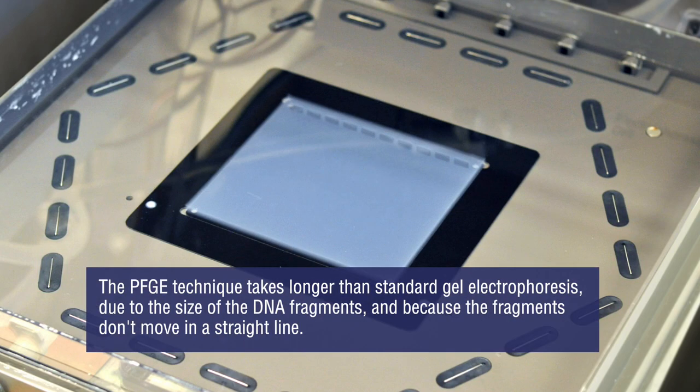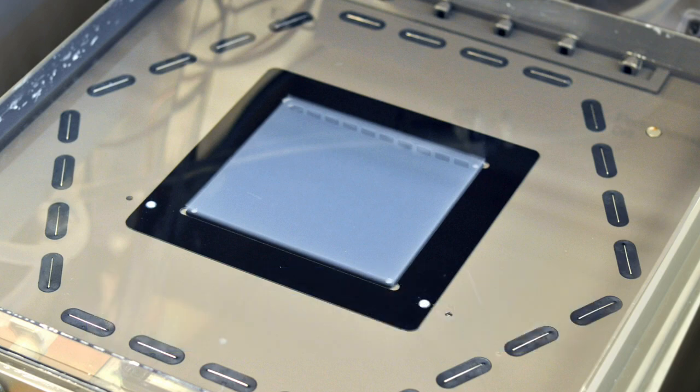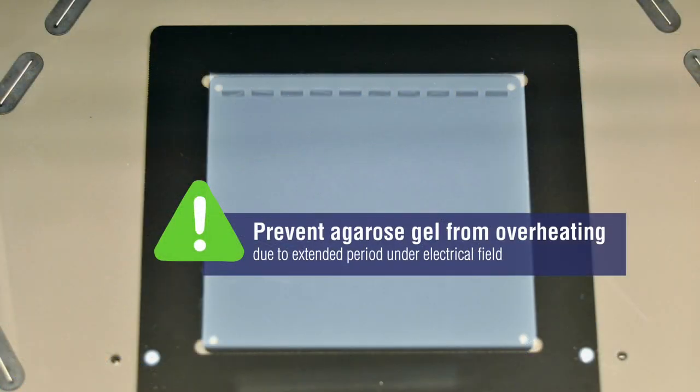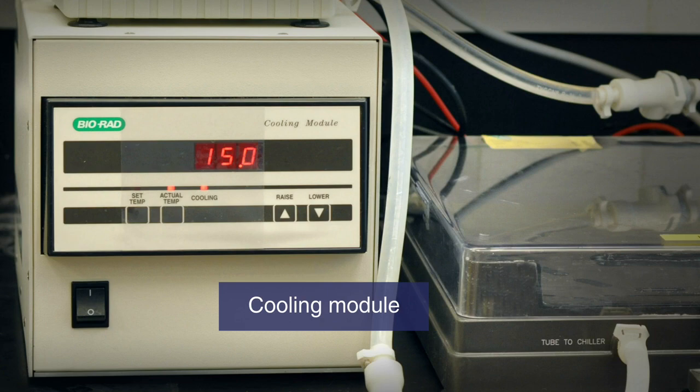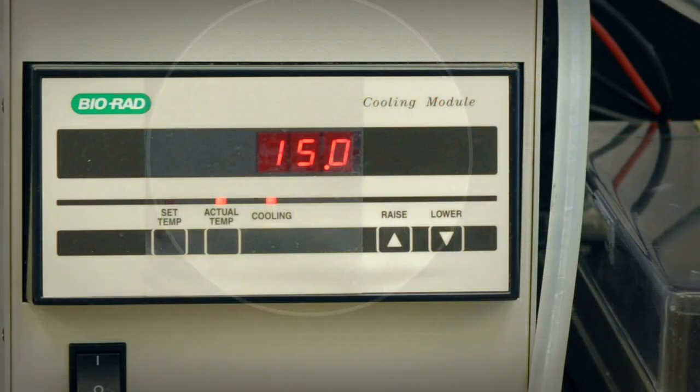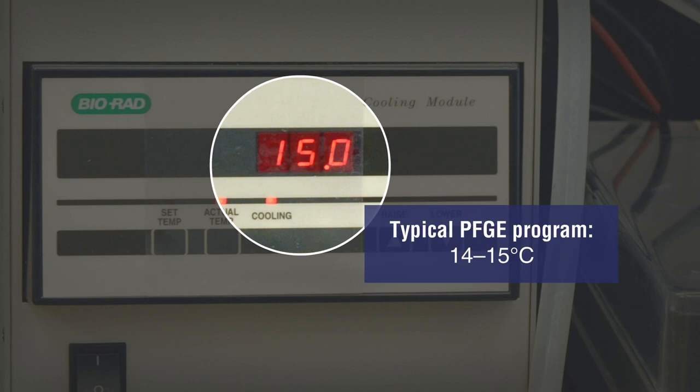The PFGE technique takes longer than standard gel electrophoresis due to the size of the DNA fragments and because the fragments don't move in a straight line. To prevent the agarose gel from overheating due to the extended period under the electrical field, which could result in a loss of resolution, a cooling module adjusts the temperature of the buffer. A typical PFGE program is run at 14 or 15 degrees Celsius.